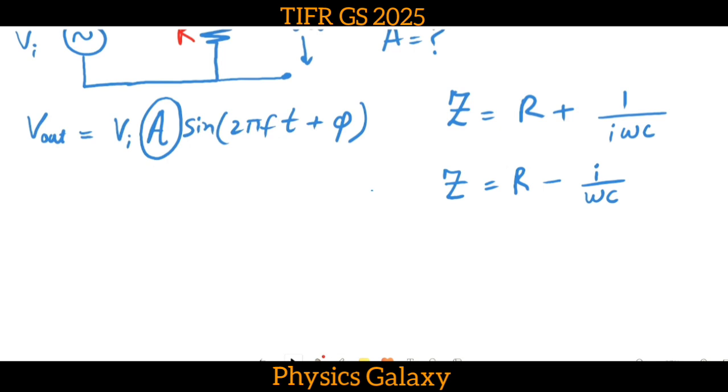And I can find the magnitude of Z. Magnitude of Z will be simply given by the square root of R² plus 1 by ω²C².